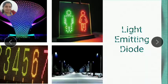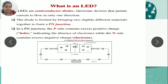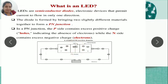Today's session is LED - Light Emitting Diode. LED is a semiconductor diode, an electronic device that permits current to flow in only one direction. Here we can see that a P-N junction is formed where P-type material and N-type material are brought together. The charges are immobile at the junction.